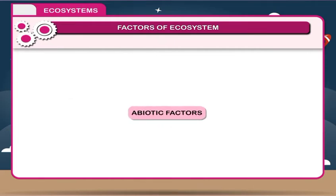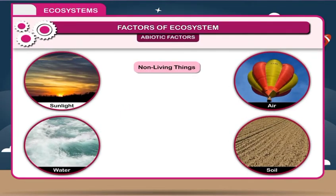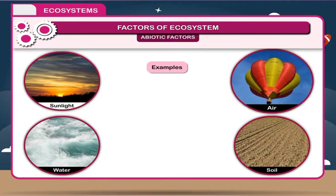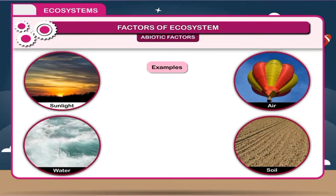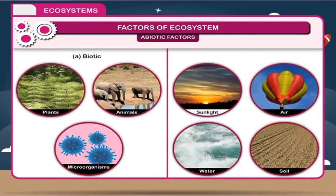Abiotic Factors: The non-living things are known as abiotic components or non-living components of the ecosystem. Examples include sunlight, air, water, soil, etc. The biotic and abiotic components of an ecosystem all work together in a balanced system.